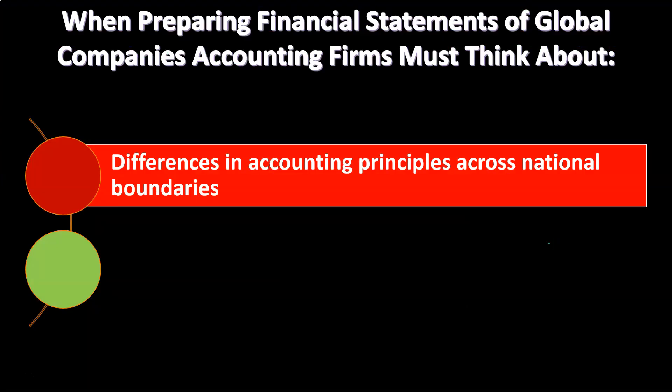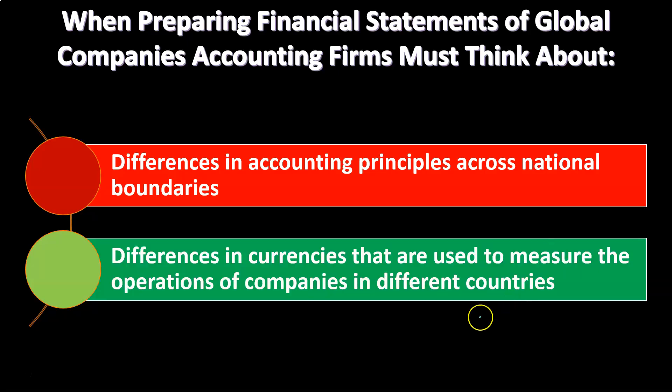When preparing financial statements of global companies, accounting firms must think about differences in accounting principles across national boundaries. If we're a large company and we have places of business across national boundaries, we have to think about what are the accounting principles and standards in those different locations, and what are the requirements to prepare financial statements when doing business in different countries with different accounting standards. There are also differences in currencies used to measure the operations of companies in different countries.